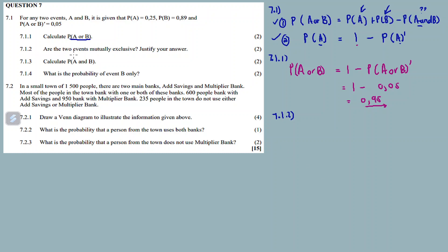Question 7.1.2: Are the two events mutually exclusive? Justify your answer. For events to be mutually exclusive, the probability of A and B must equal zero. Since I don't have the probability of A and B directly, we can test for mutual exclusivity using law number one. If the probability of A and B is zero, the events are mutually exclusive.